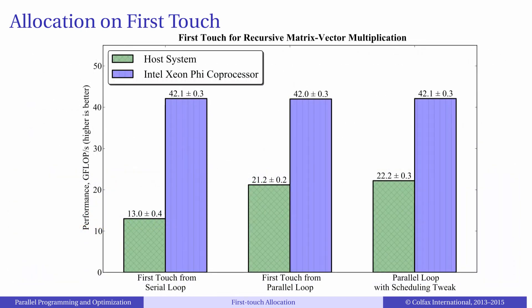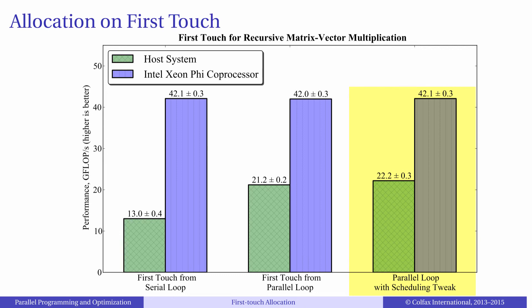Going back to our example with matrix-vector multiplication, this plot shows the importance of first-touch. In the first set of bars, matrix A was allocated by one thread, which had a performance penalty of almost a factor of two on the host, which is a two-way NUMA system. In the second set of bars, we allocated matrix A from a parallel region, which was very important for performance on the host. Additional tweaks of the parallel pattern on first-touch can improve performance by a few percent further. For more information refer to our book. At the same time, performance on our first-generation Intel Xeon Phi co-processor was not sensitive to first-touch pattern, because first-generation Xeon Phi is not a NUMA system.